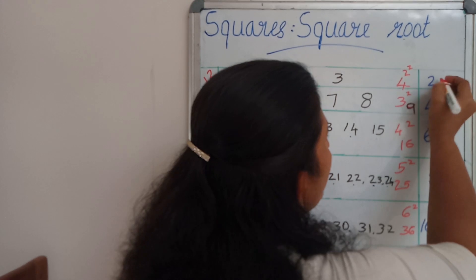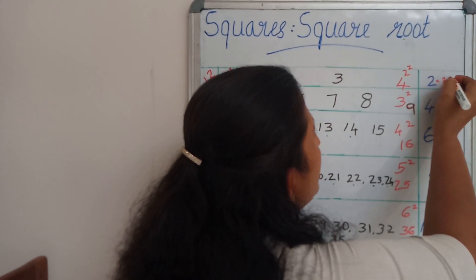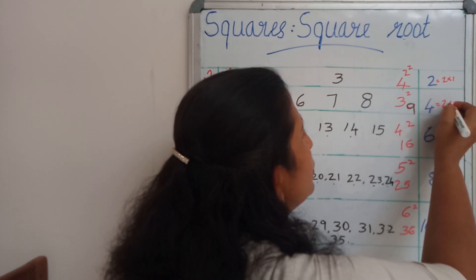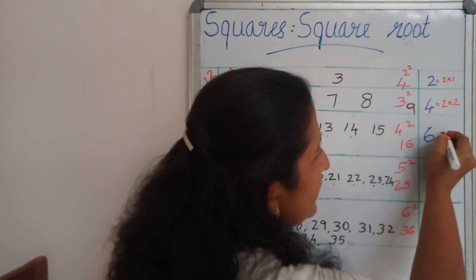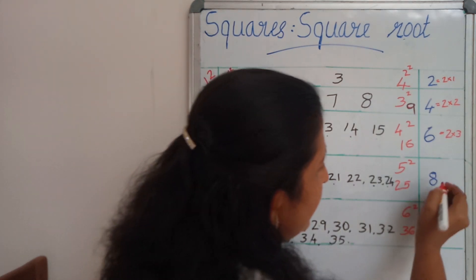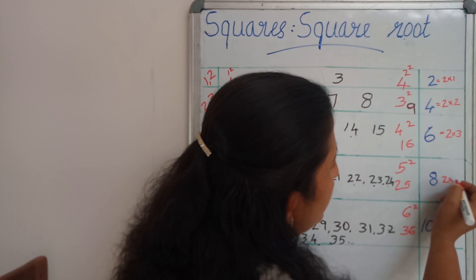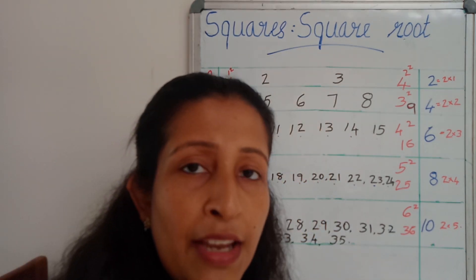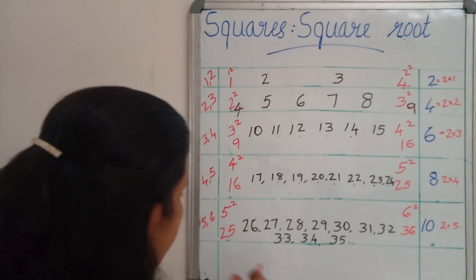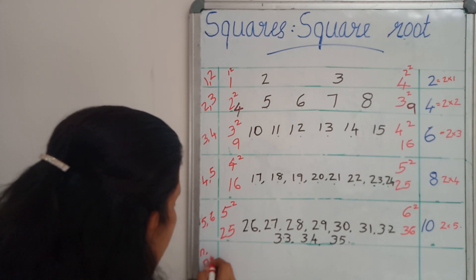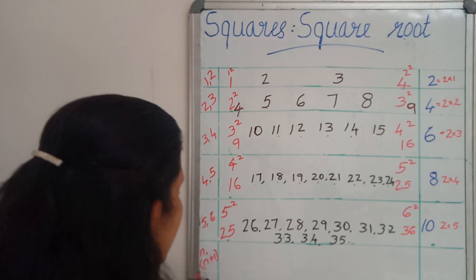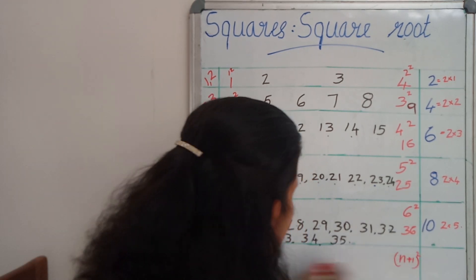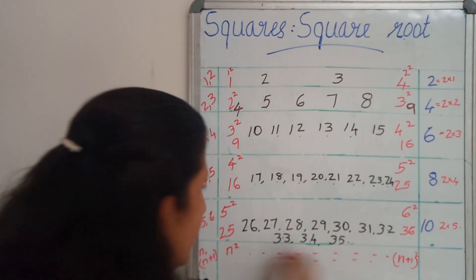Instead of 2, I am going to write 2 into 1. Instead of 4, write 2 into 2. Instead of 6, write 2 into 3. Instead of 8, write 2 into 4. Instead of 10, write 2 into 5. My question is: if I am taking two consecutive numbers as n and n+1 and finding the squares n square and (n+1) whole square, how many numbers can we find in between these two numbers?